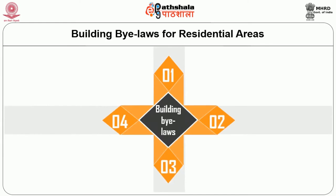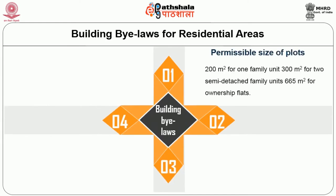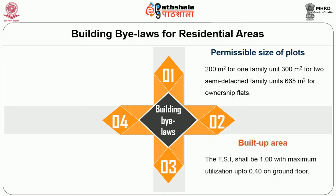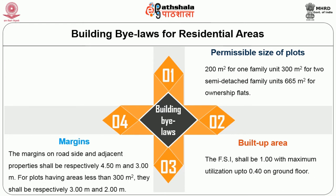Following are the important building bylaws. Permissible size of plots: 200 m² for one family units, 300 m² for two semi-detached family units, and 665 m² for ownership plots. Built-up area: the FSI shall be 1 with maximum up to 0.4 on the ground floor. Margins: on the road side and adjacent properties shall be 4.5 m and 3 m respectively; for plots having areas less than 300 m², the margins shall be 3 m and 2 m respectively.